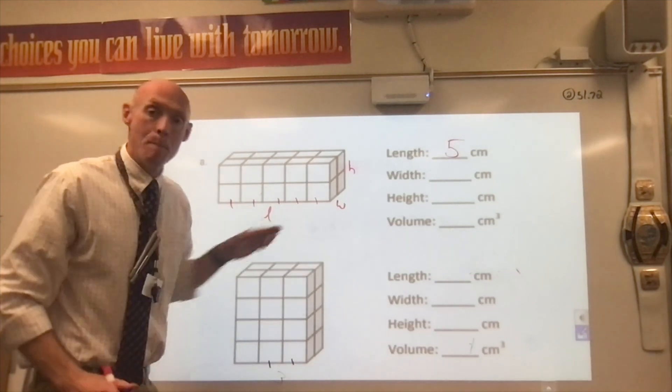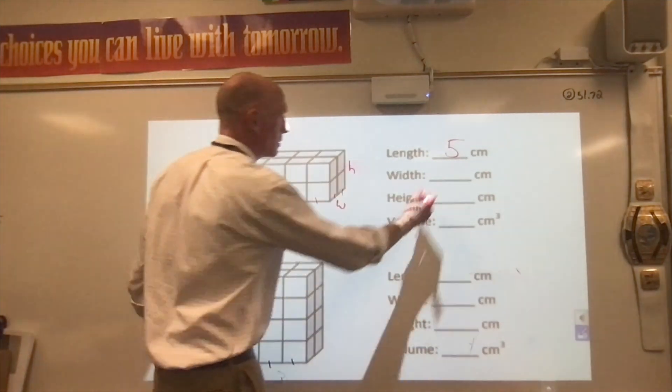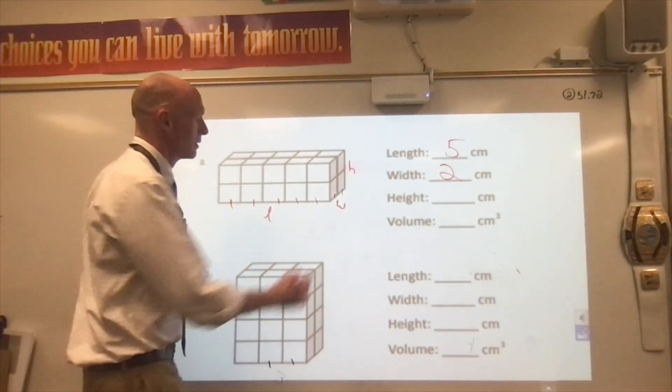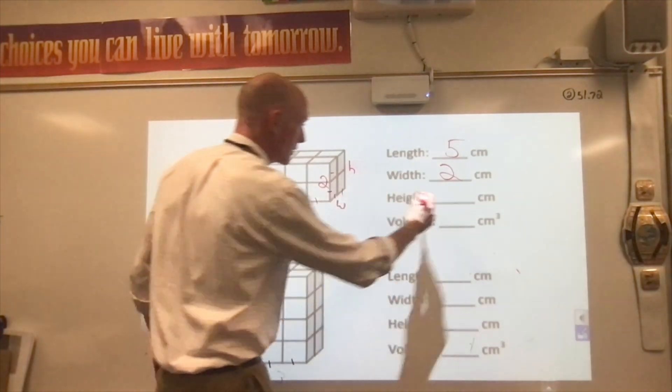Width, how far back are you going? One, two. Finally, height. How tall is it? One, two. Height is going to be two.